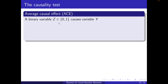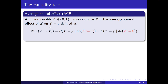Let's make things more formal. A binary variable Z causes variable Y if the Average Causal Effect (ACE) of Z on Y is nonzero. ACE is the difference in the probability of Y conditioned via intervention on both values of Z: ACE = P(Y | do(Z=1)) − P(Y | do(Z=0)). If this is nonzero, we say there is a causal effect from Z to Y.